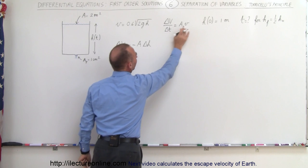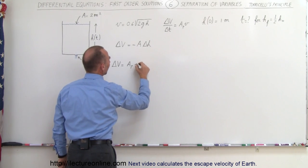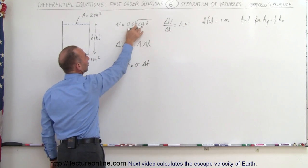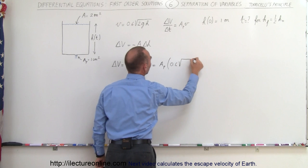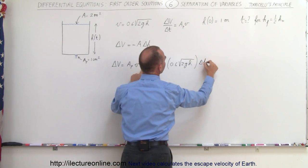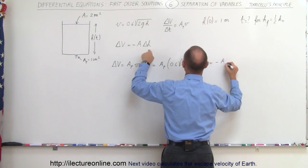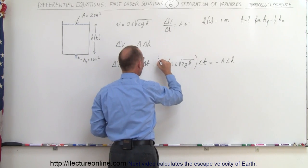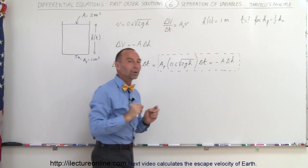Now let's take this equation right here, take the delta t and put it over there, and we can say that the change in volume can also be written as the cross-sectional area of the pipe down here times the velocity of the water coming through the pipe — defined by that right there — times delta t. Then we replace V by that quantity, so this is equal to the cross-sectional area of the pipe times V, which is 0.6 times the square root of 2G times H, which is a function of time, times delta t. And that we can set equal to what we have over there: minus the cross-sectional area of the barrel times delta H. We were looking for a differential equation that related height and time, and you can see that the only two variables in this portion of the equation are indeed height and time, and that we can write as a differential equation.